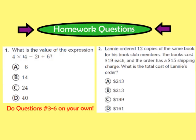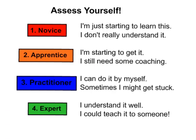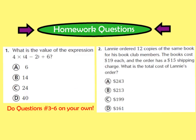For tonight's homework, please complete questions 1 and 2, as well as numbers 3 through 6, found on page 24 in your GoMath workbook. Somewhere on your homework page, let me know whether you feel like you're number 1 (a novice), number 2 (an apprentice), number 3 (a practitioner), or number 4 (an expert). Have a great evening and we'll see you at school tomorrow.